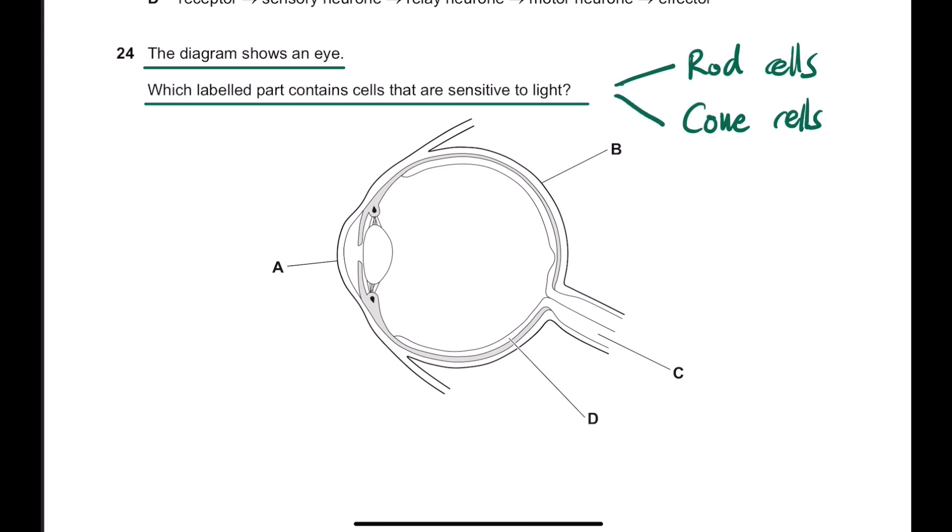Out of these two cells, the cells that are sensitive to light are the rod cells. The cone cells are also sensitive, but they're more concentrated on colors.